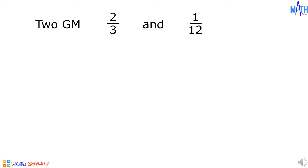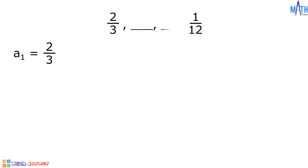Let us insert two geometric means between 2/3 and 1/12. Let us consider 2/3 as the first term, and since we will insert two geometric means, 1/12 is the fourth term.